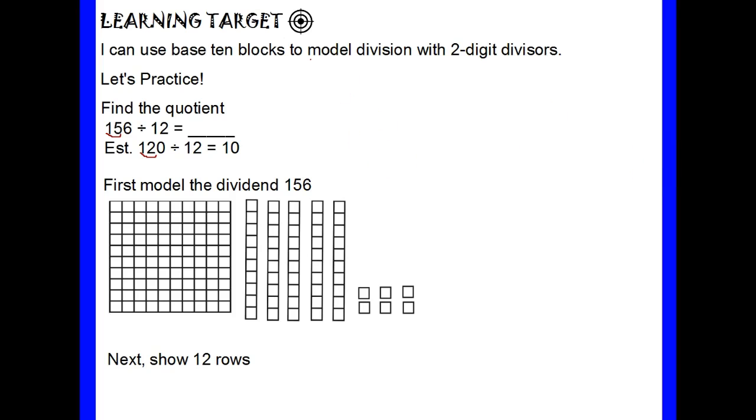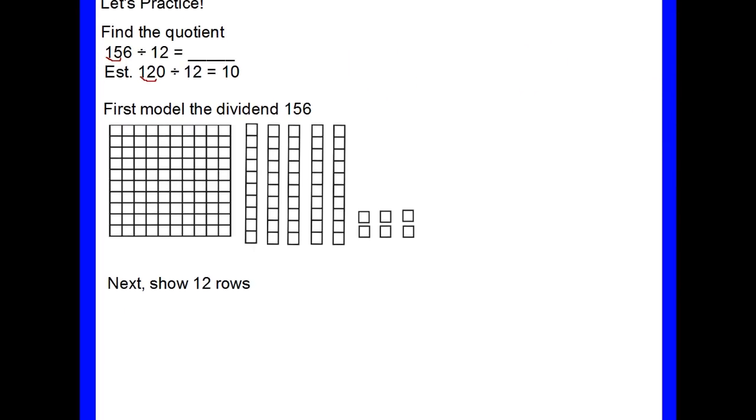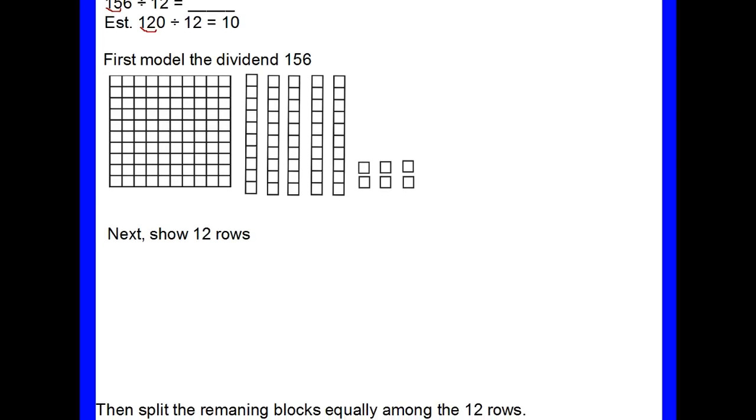The next thing that we're going to want to do is show 12 rows. The reason that I'm showing 12 rows is because 156 divided by 12 has a divisor of 12, so the divisor is going to let me know how many rows I need to show.